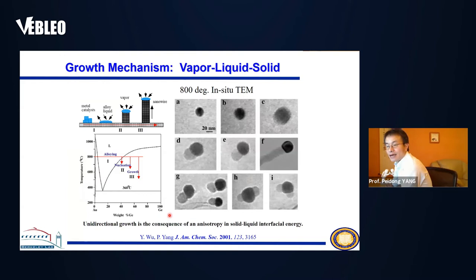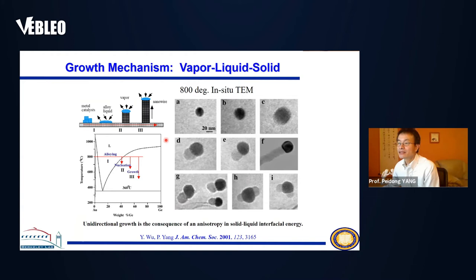Back in 1999, when I started my independent research at the Berkeley chemistry department, the first thing we looked at was the fundamental growth mechanism of these inorganic one-dimensional nanostructures. We examined this vapor-liquid-solid process using in-situ high-temperature transmission electron microscopy. Looking at the illustration here, this is how the VLS method works.